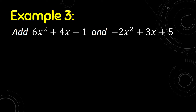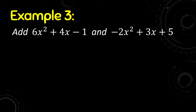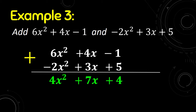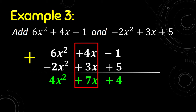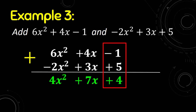Another example: 6x² plus 4x minus 1, and negative 2x² plus 3x plus 5. We check the like terms: 6x² and negative 2x² are like terms, 4x and 3x are like terms, and negative 1 and 5 are like terms as well. Combining: 6x² minus 2x² is 4x², 4x plus 3x is 7x, and 5 minus 1 is positive 4. That is the sum of the given polynomials.